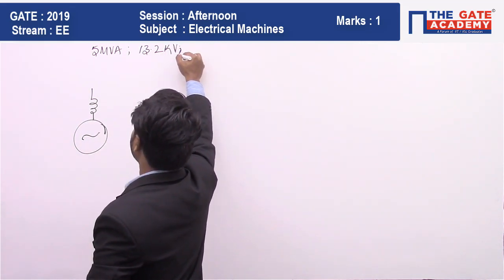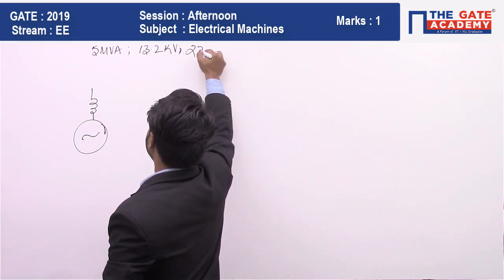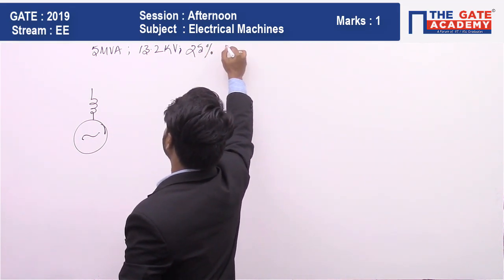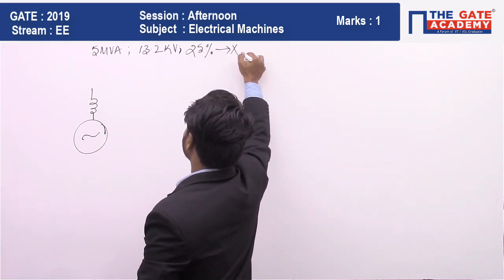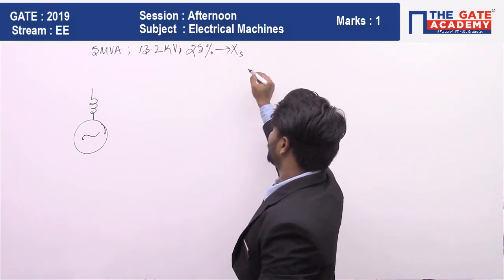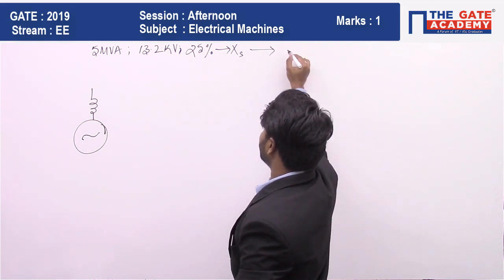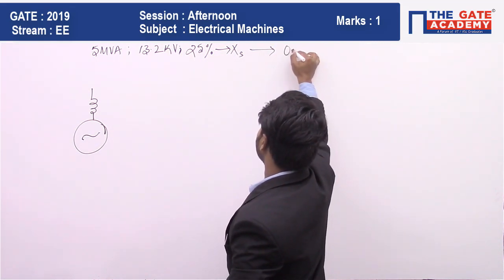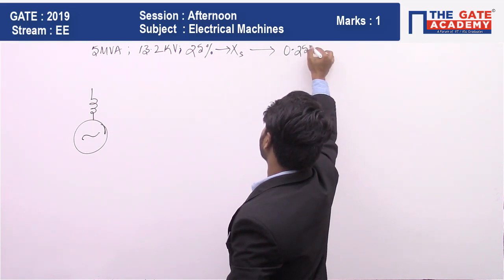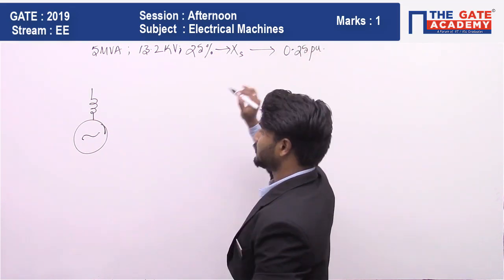And 25% reactance. Therefore, in per unit, you can write reactance as 0.25 per unit.